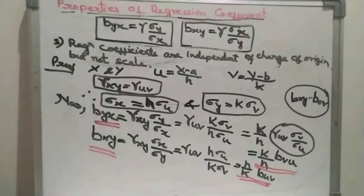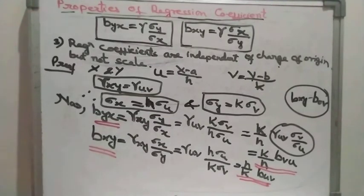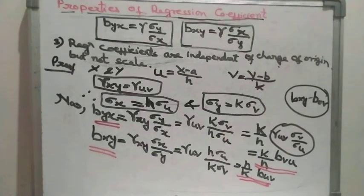To summarize, we have covered three properties of regression coefficients. First: the geometric mean of the regression coefficients is the correlation coefficient. Second: if one regression coefficient is greater than one, then the other must be less than one. Third: regression coefficients are independent of change of origin, but not scale. The fourth property — that the arithmetic mean of the regression coefficients is greater than or equal to the correlation coefficient (provided ρ > 0) — you should try yourself. Thank you.